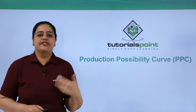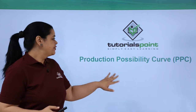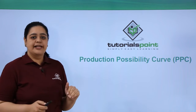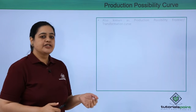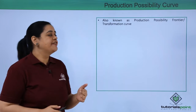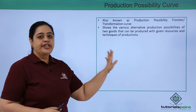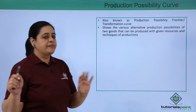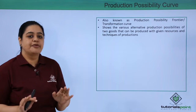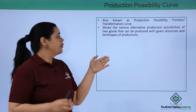One of the central economic problems is what to produce and how much to produce. We have the Production Possibility Curve, also known as the Production Possibility Frontier or a transformation curve, to help us understand and solve that problem. We call it PPC popularly. It shows the various alternative production possibilities available to an economy where two goods can be produced.